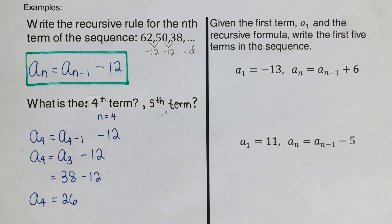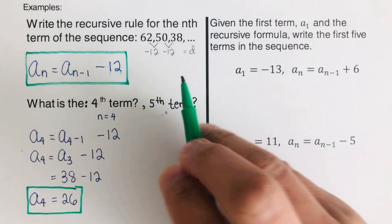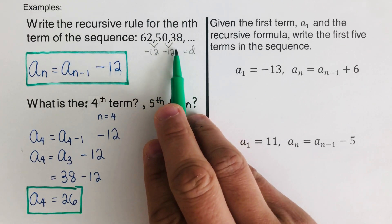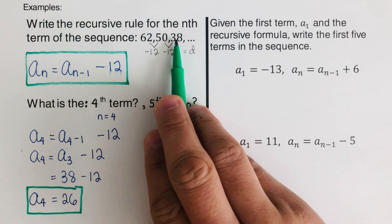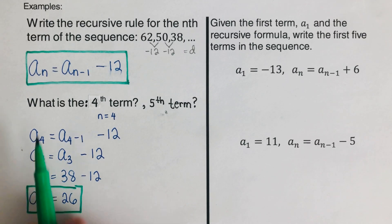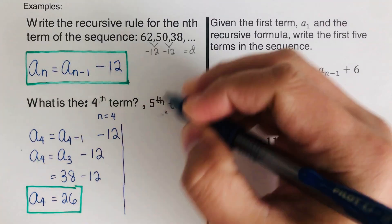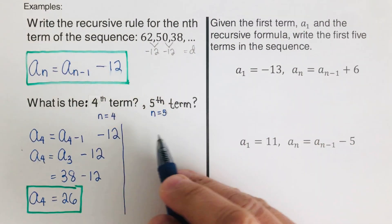The fourth term is 26. This makes sense because going back to the sequence, 38 minus 12 equals 26 — we keep subtracting 12 from each term. Once we know the previous term, we can determine the next term — that is the recursive formula. Now for the fifth term, we label n as 5 and show the work.